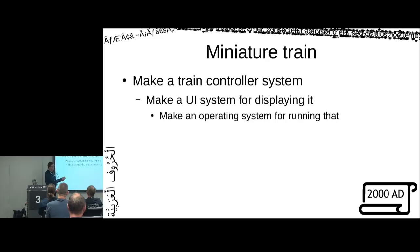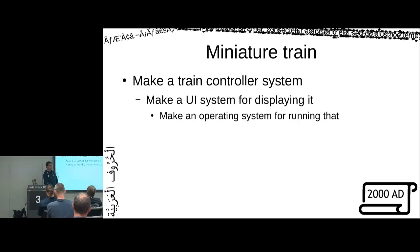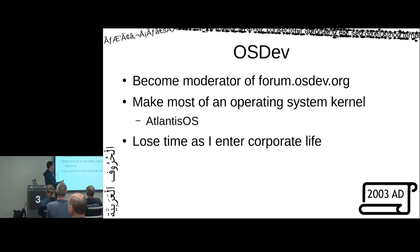So I had a miniature train set and wanted a computer-controlled system with a nice UI. It's around 2000, I have a computer with a parallel port and a nice display. I need a UI system and real-time track editing, but I'm not doing this on DOS — definitely not Windows. So I decided to make an operating system. Three years later I'm a moderator at osdev.org. I made most of an OS kernel called AtlantisOS, still findable on SourceForge. Then in 2006 I entered corporate life and stopped working on it.